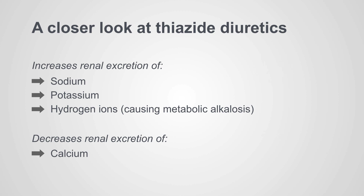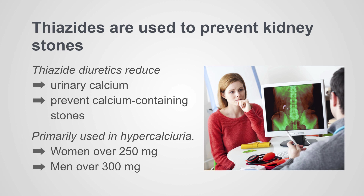Thiazide diuretics increase the renal excretion of sodium, like all diuretics, and increase renal excretion of potassium, and increase excretion of hydrogen ions, causing metabolic alkalosis. Unique to thiazide diuretics is that they decrease renal excretion of calcium — lowering renal loss of calcium — which makes them useful to prevent kidney stones.